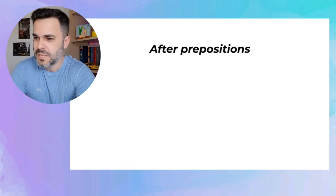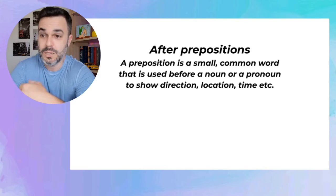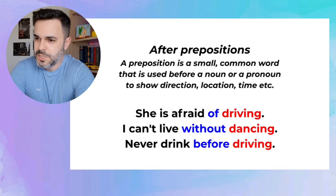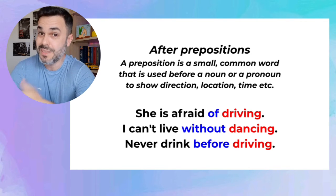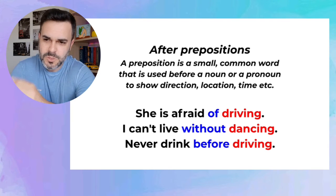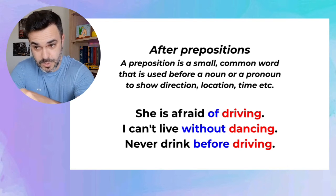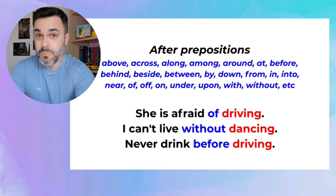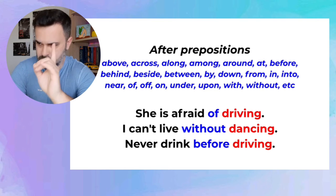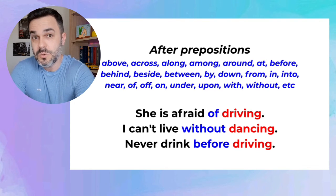Step number four: after prepositions. A preposition is a small common word used before a noun or pronoun to show direction, location, time, etc. Some examples: She is afraid of driving. I can't live without dancing. Never drink before driving. Of, without, before — they're prepositions. When you have to use a verb after one of these words, remember, it's verb plus ING — it's a gerund. Here is a list with more prepositions; if you have to use a verb after one of them, add ING. If you'd like to learn more about prepositions, leave a comment and I'll make a video with everything you need to know.